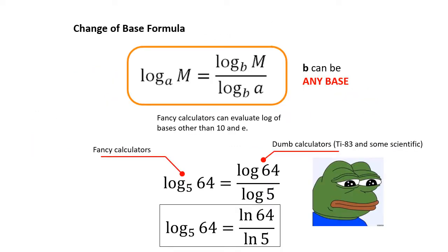So this is what the change base formula is. If you have a log base a of m and you want to calculate that, another way you can approach it is: log base b of m divided by log base b of a. A way to memorize this is: the bigger thing, which is the argument, goes on top; the smaller thing, which is the base — like it's a subscript — goes on the bottom. And b can be any base. Since it can be any base and every calculator can do log base 10, the common log, or log base e, the natural log, you would use either of those.